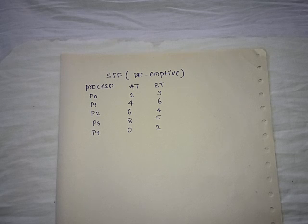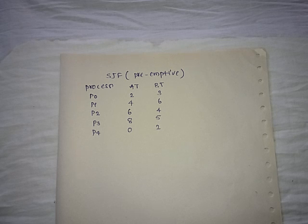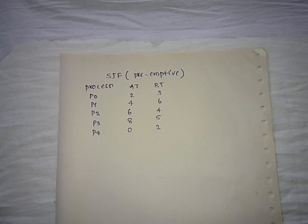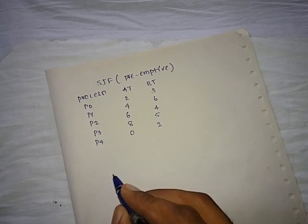Before starting, know that preemptive means we can break execution of any process at any time. In other words, we can execute a process in a partitioned fashion. This happens because after some time, when we first allocate a process, a new process may come which is of shortest job — and that is the main purpose for using this algorithm. So we try to find out the Gantt chart.